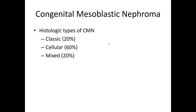There are three histologic subtypes of congenital mesoblastic nephroma: the cellular variant, which is the most common at around 60%; a classic variant, which is less cellular; and mixed, which is just a combination of the two.